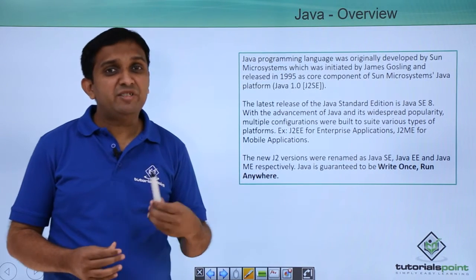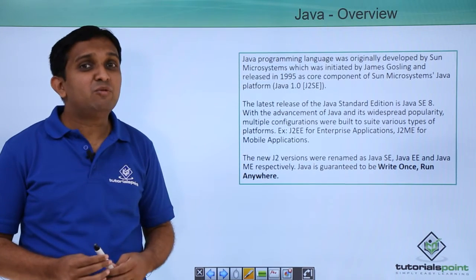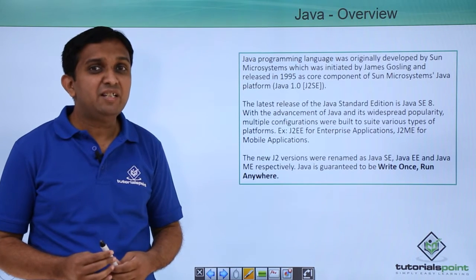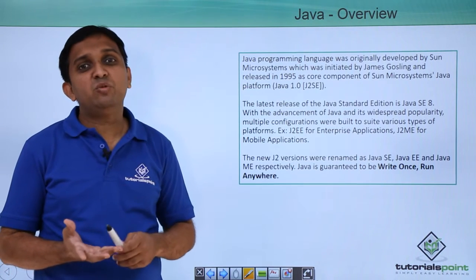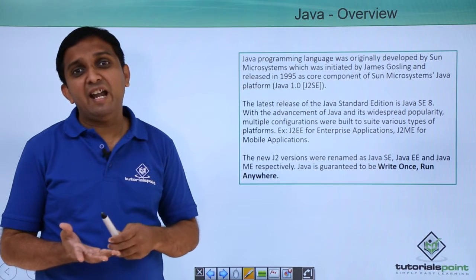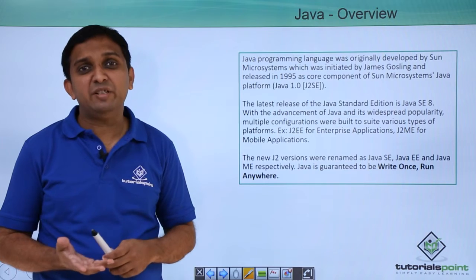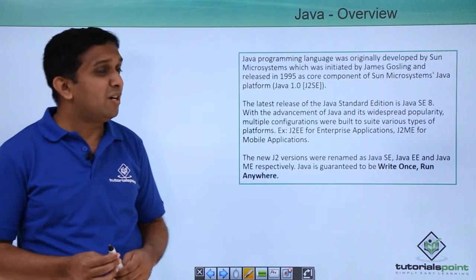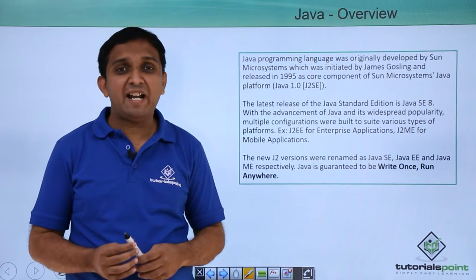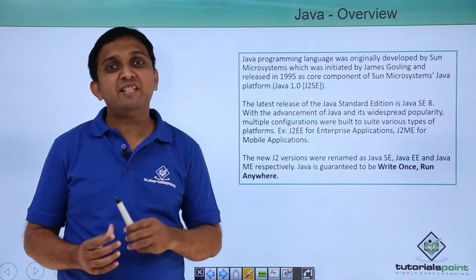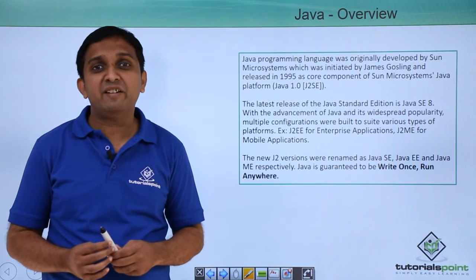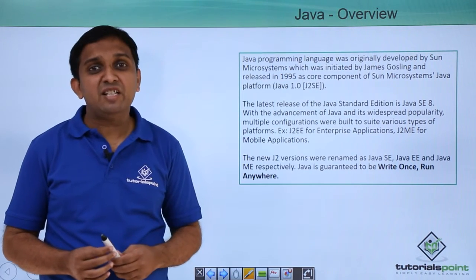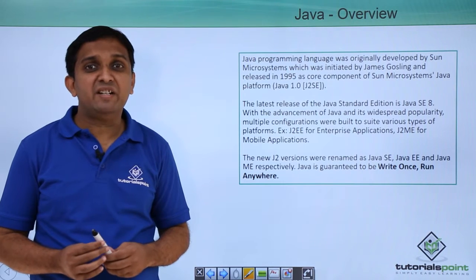When it was developed, it was developed into three different configurations namely J2SE, J2EE and J2ME. J2SE stands for Java 2 Standard Edition, J2EE stands for Java 2 Enterprise Edition, and J2ME stands for Java 2 Mobile Edition.